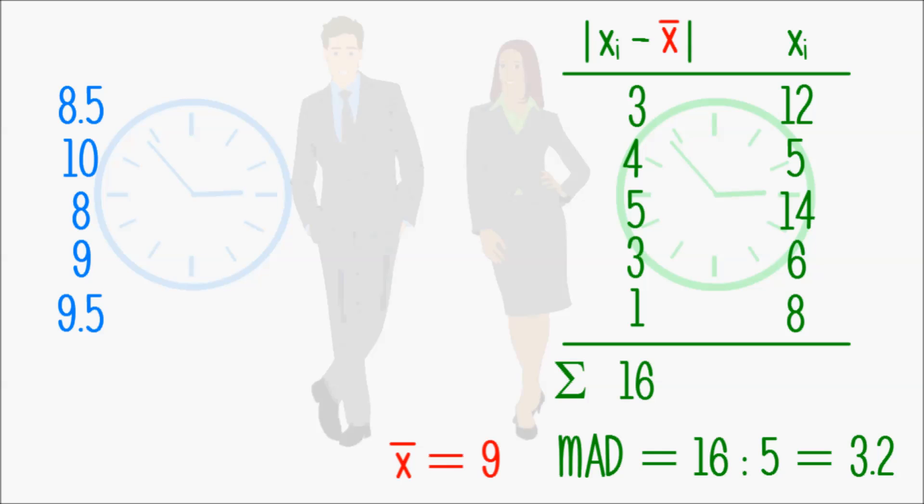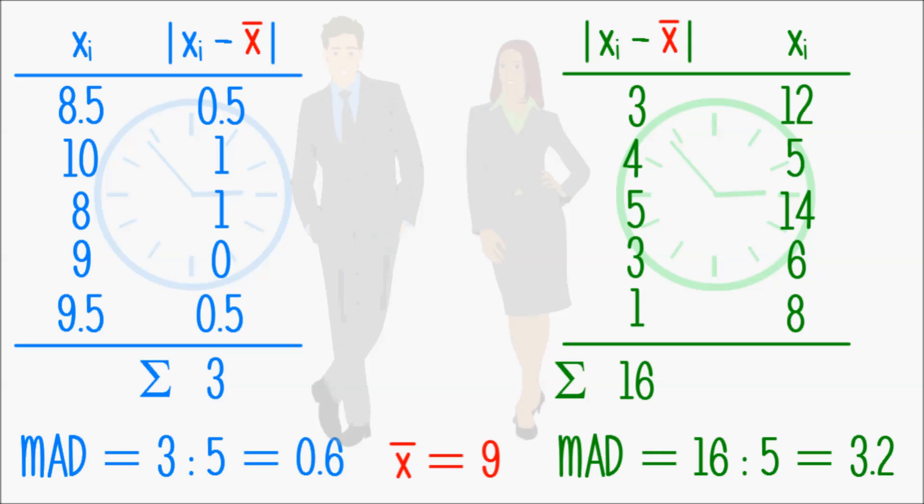Let me quickly also calculate the mean absolute deviation for Patrick's working hours, which results in 0.6, and now again we can see there is more variability in Anna's working hours than there is in Patrick's.